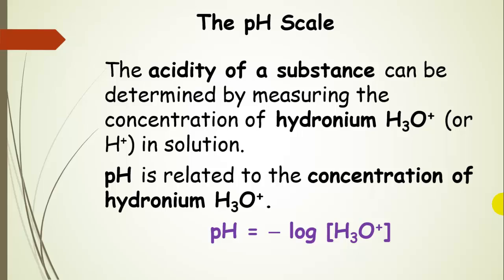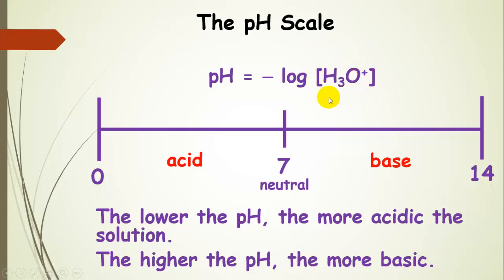Now let's talk about the pH scale. pH is a way to describe the acidity of a substance, and it's determined by measuring the concentration of hydronium in solution. We can calculate pH by taking the negative log of the hydronium ion concentration. After calculating pH, at 25 degrees C in water, the pH scale runs between 0 and 14.